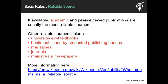Another guideline to keep in mind is Wikipedia's policy on what counts as a reliable source. Source material must have been published — meaning made available to the public in some form. Unpublished materials are not considered reliable. Editors should also use sources that directly support the material presented in an article and are appropriate to the claims made. If available, academic and peer-reviewed publications are usually the most reliable sources. However, other reliable sources include university-level textbooks, books published by respected publishing houses, magazines, journals, and mainstream newspapers.